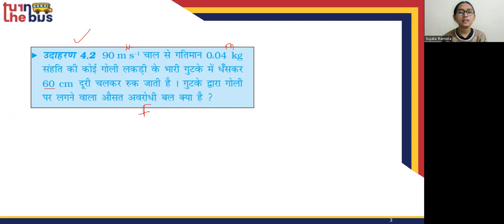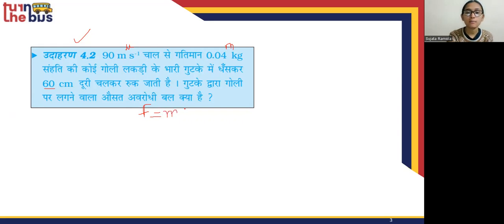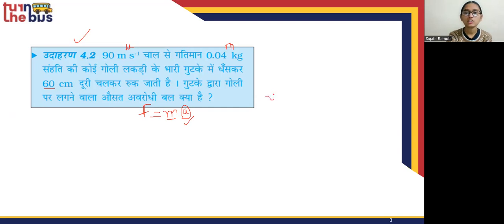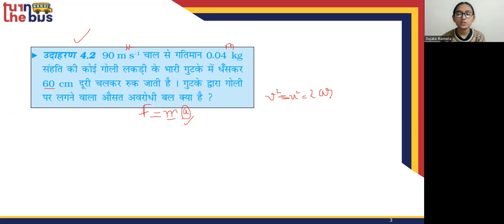We need to establish how momentum is given by mass and velocity. We know that we have all the values given. We have a displacement but no acceleration, so we need to find the acceleration first. To find acceleration, we use the formula: v² - u² = 2as.